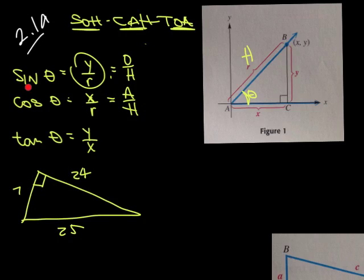The rest of the trig functions, cosecant, secant, and cotangent. Cosecant is the reciprocal, so it's just H over O. The reciprocal of cosine is secant, it's going to be H over A. And cotangent is the reciprocal of tan, and it's going to be X over Y.